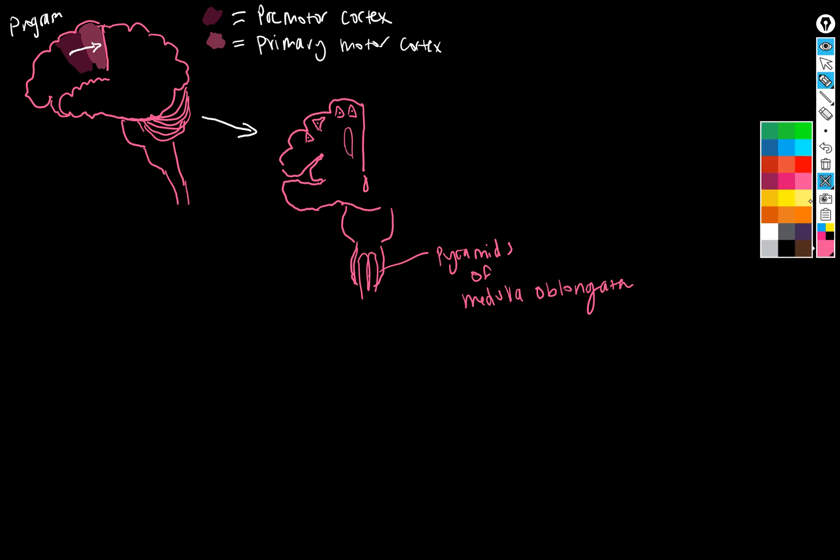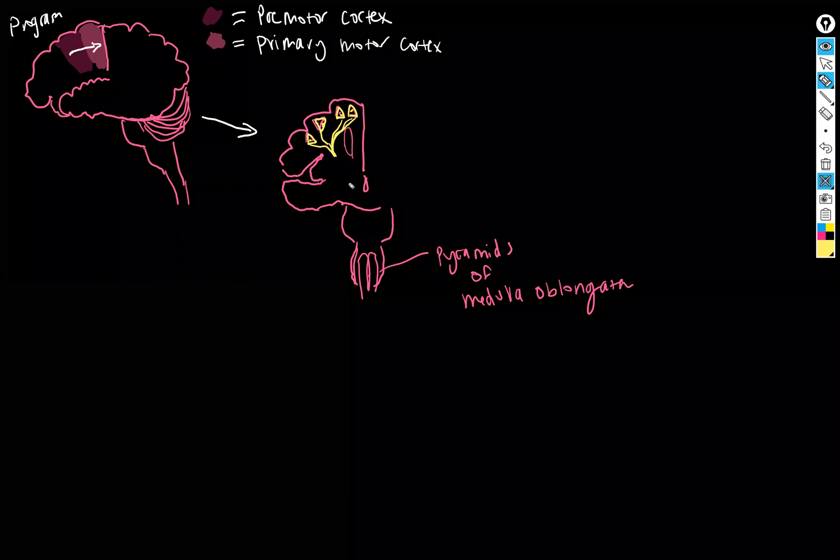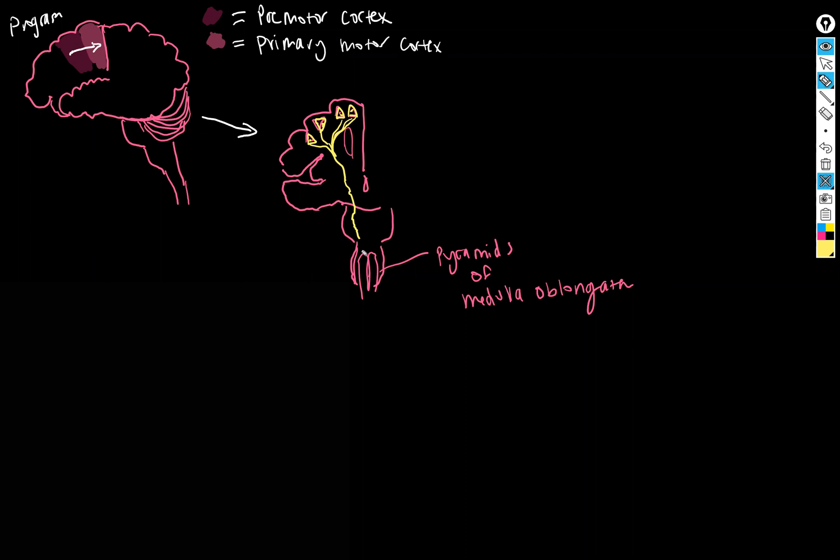And then since I've drawn everything else in pink, I'm actually going to redraw the upper motor neurons in a different color so that we can more easily trace their path, because everything being pink isn't helpful. So these are going to join in tracts and they are going to descend down, and once they get to the pyramids they go to the other side.